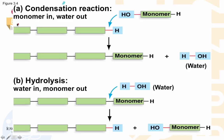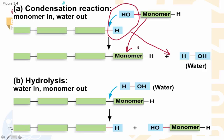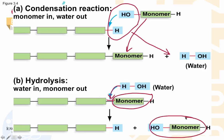Panel A shows a graphic representation of a condensation reaction. When adding a monomer to a growing polymeric chain, the hydroxyl of the monomer combines with the hydrogen at the end of the growing polymer to release a water molecule, leading to the addition of the monomeric unit to the growing chain. Panel B shows the process of hydrolysis, where monomeric units are removed by the addition of a water molecule across the bond between two monomers, and the monomeric unit is subsequently released.